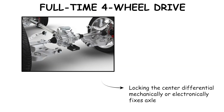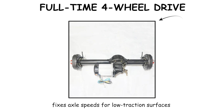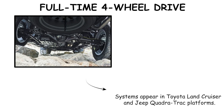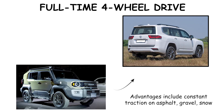Locking the center differential mechanically or electronically fixes axle speeds for low-traction surfaces. Low-range gearing, commonly around 2.5 to 1 ratio, multiplies torque in newton meters for off-road use. Systems appear in Toyota Land Cruiser and Jeep Quadra-Trac platforms. Advantages include constant traction on asphalt, gravel, snow, and mud with predictable handling.